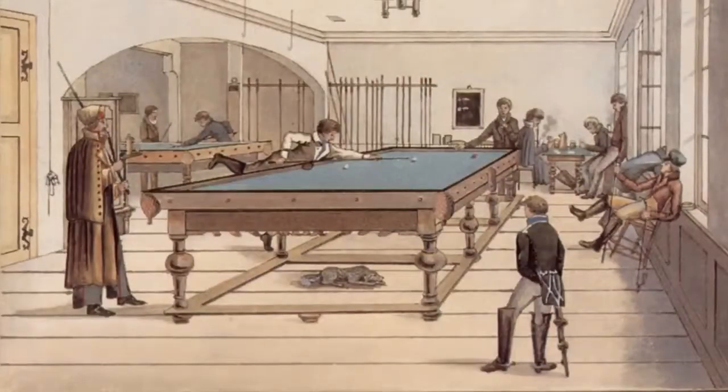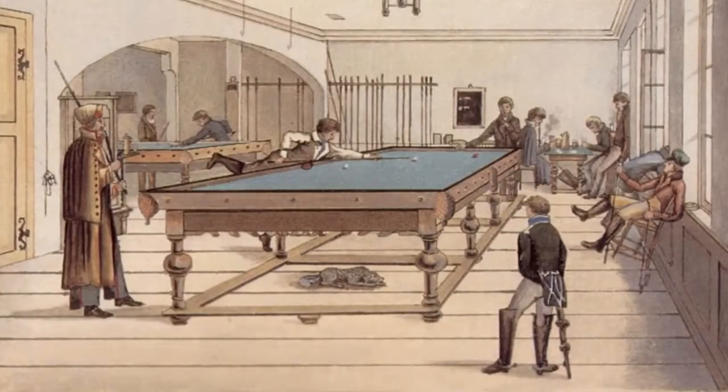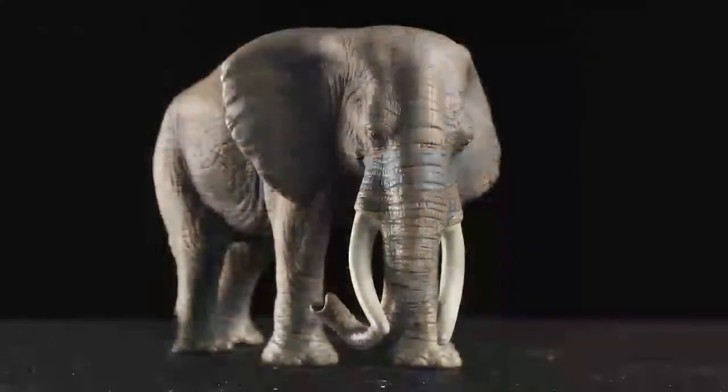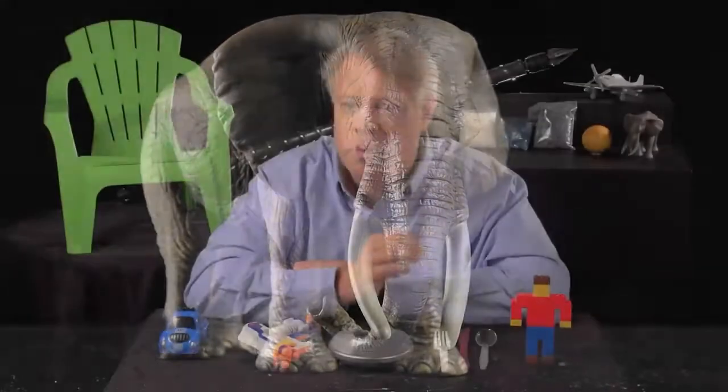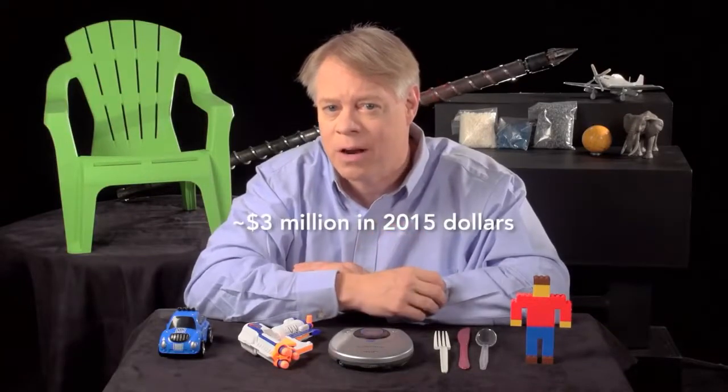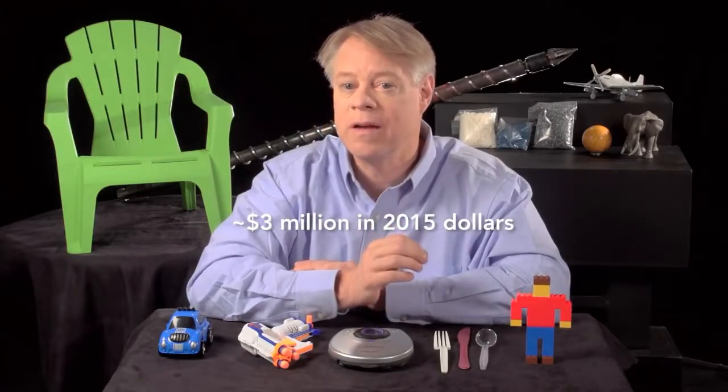Injection molding was invented to solve a problem for billiards. In the 19th century, billiard balls were composed of ivory harvested from the tusks of African elephants. This devastated the elephant population, so a billiards manufacturer offered a $10,000 prize for a replacement for ivory.